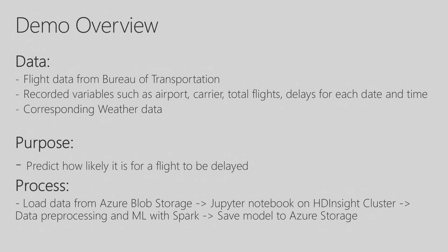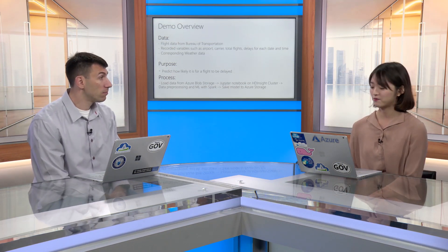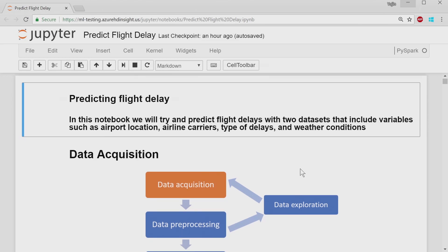For the demo, we're looking at two different data sets: a flight data set and a corresponding weather data set. The flight data set is from the Bureau of Transportation, recording variables such as airport, carrier, total number of flights, and the delays for each of those variables. The weather data includes things like humidity and temperature. The purpose of this demo is to predict how likely it is for a flight to be delayed based on all these variables. The process involves loading data from an Azure Storage account into your Jupyter Notebook on your HD Insight cluster, doing all the data processing, going through the machine learning pipeline, and saving the resulting model back to Azure Storage.